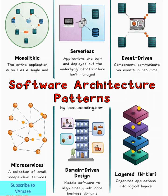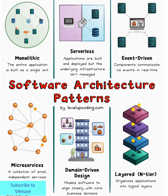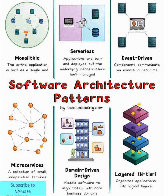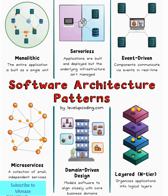First up is the monolithic architecture, the traditional approach that many developers start with. In a monolithic system, your entire application is built and deployed as a single unit. Everything lives together — your user interface, business logic, and data access layers all bundled into one cohesive package. The beauty of monolithic architecture lies in its simplicity. It's straightforward to develop, test, and deploy. Your team doesn't need to worry about complex distributed systems or network communication between services.